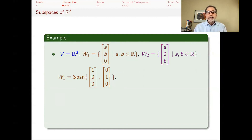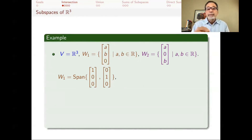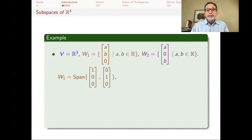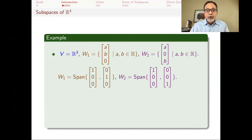All linear combinations of (1,0,0) and (0,1,0) are things of the form A·(1,0,0) + B·(0,1,0), which gives the typical element (A, B, 0) of W1. Both vectors are in W1 and their span is W1. That's actually why W1 is a subspace — it's the span of two vectors in a vector space, and spans are always subspaces. Likewise, W2 is the span of (1,0,0) and (0,0,1). Linear combinations of those give A·(1,0,0) + B·(0,0,1), the typical element of W2, so W2 is also a subspace.